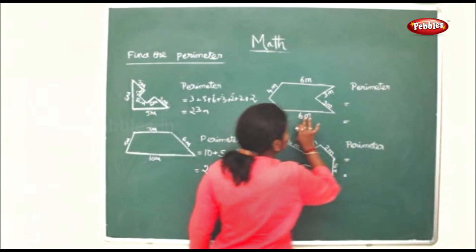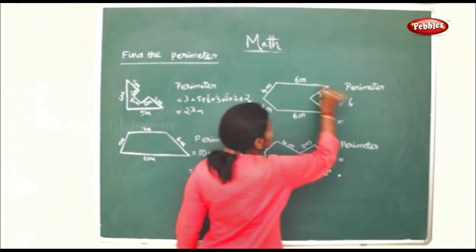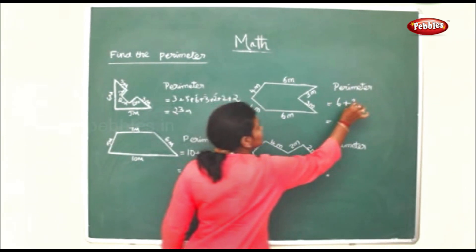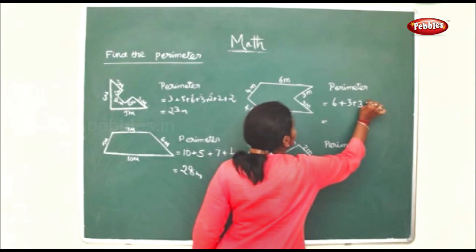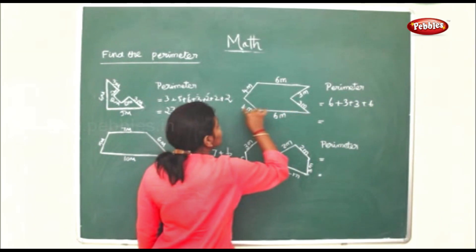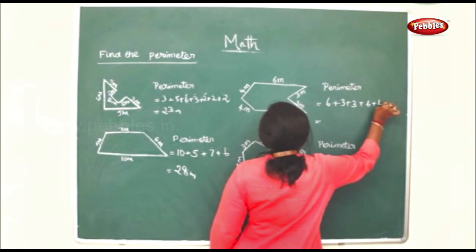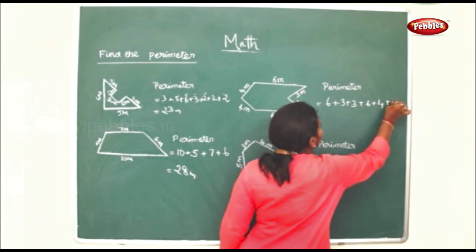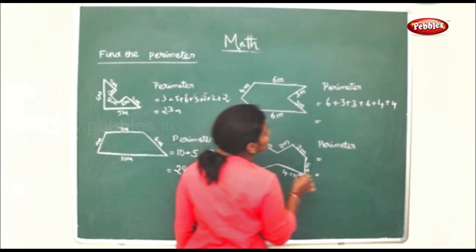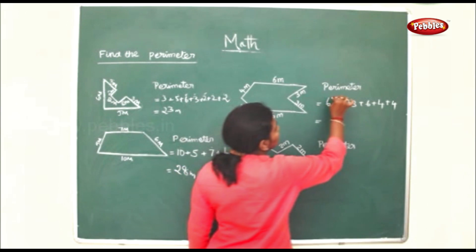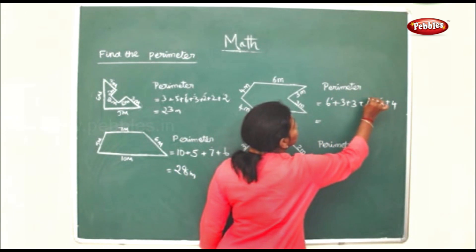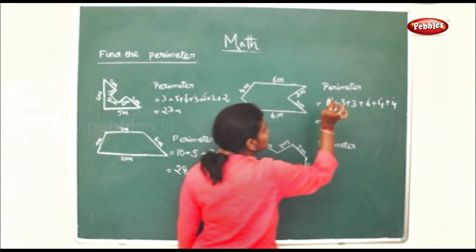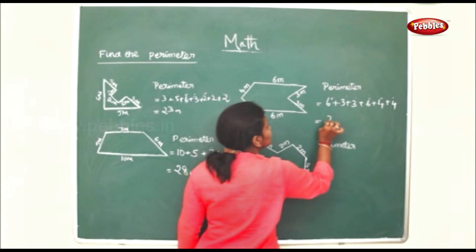For this figure, the sum of the perimeter will be 6 plus 3 plus 3 plus 6 plus 4 plus 4. So 6 plus 4 is 10, and again 6 plus 4 is 10, giving 20, plus 3 is 23, plus 3 is 26 meters.